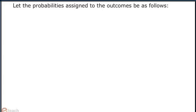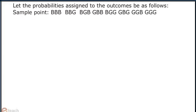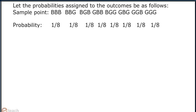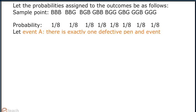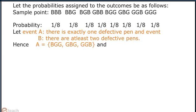Let the probabilities assigned to the outcomes be as follows. Then event A: there is exactly one defective pen, and event B: there are at least two defective pens. Hence, A and B contain the shown elements.